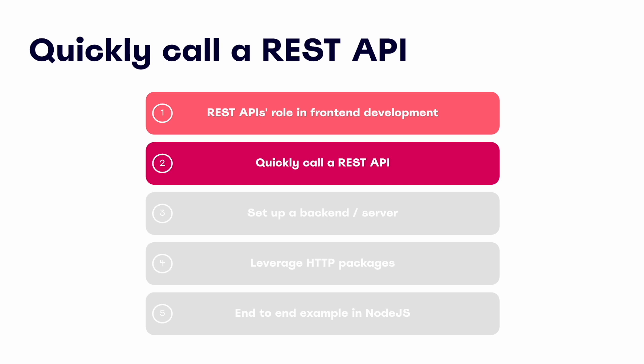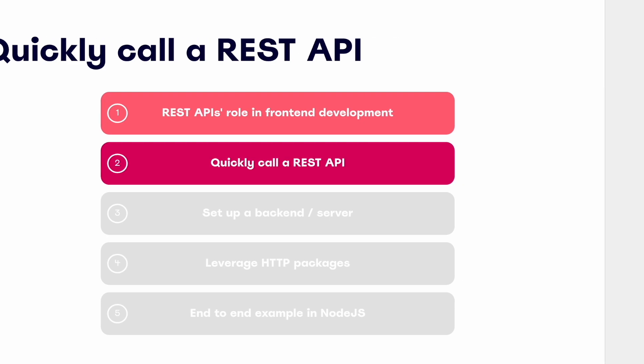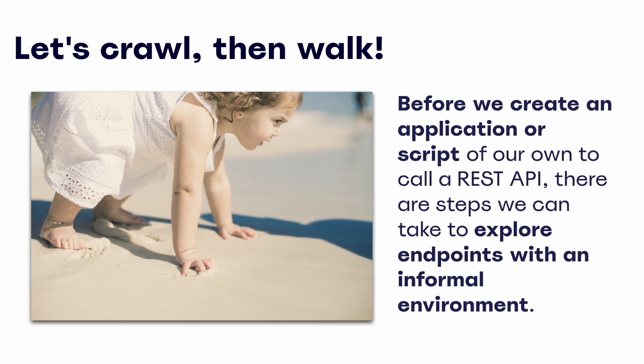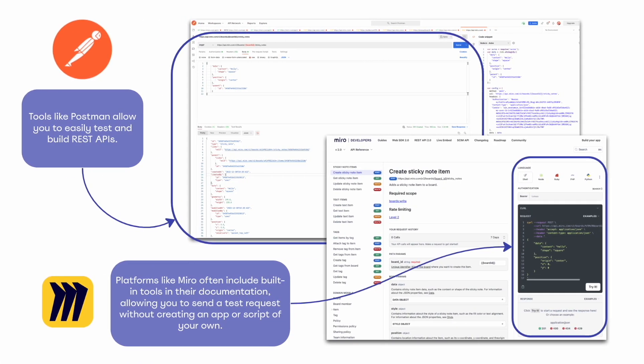Now that we've set the scene and have a better sense of the value in leveraging REST APIs in front-end development, let's dig into some of the essentials and get our hands dirty. Before we create our own standalone app, there are some easy steps we can start to take to test out APIs in a less formal environment. There are many tools out there to make working with and calling APIs a breeze, but without a doubt one of the leaders in this category is Postman. We can use a tool like Postman to make requests to almost any API — you can even use it to build your own APIs, but we won't get into that today.